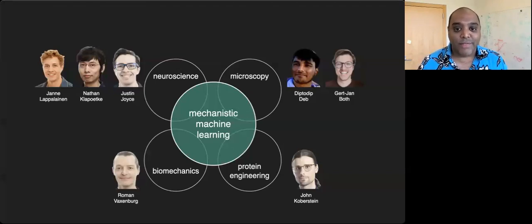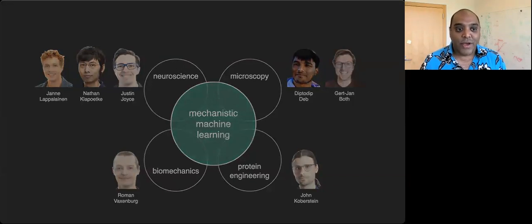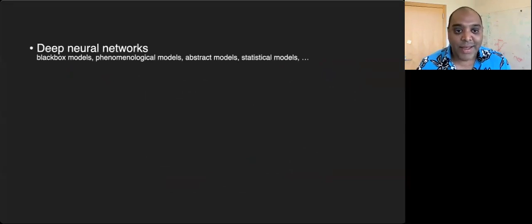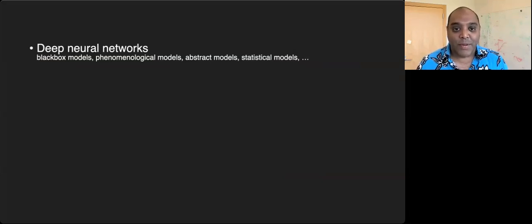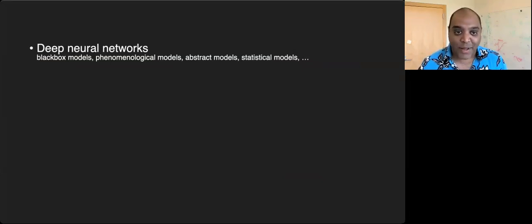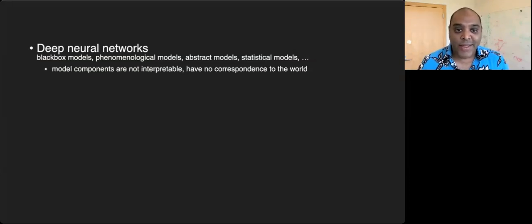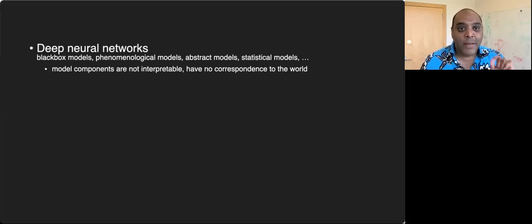The theme that unifies all these efforts is that we're focused on building mechanistic models using modern machine learning methods. So what is a mechanistic model? Deep neural networks, which are now the workhorse of modern machine learning, are often called black box models, phenomenological models, statistical models, or abstract models depending on the community. These are quite powerful function approximators trained to approximate a particular input-output function, but the internals are not really interpretable.